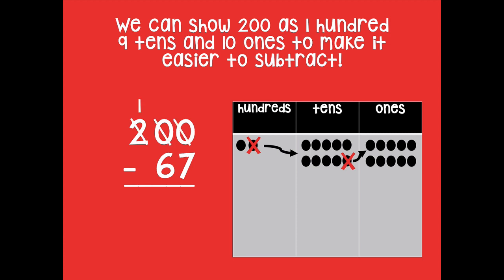There's my 100 left, my 9 tens, and my 10 ones. Now that 10 is 10 ones because there was a 0 there, so remember we're just adding 10 ones to how many ones are already there.